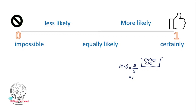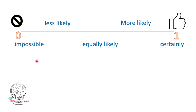Now let's talk about 'impossible'. In that same example, what is the chance of getting a black ball? There is no black ball in the bag. So if you try to get a black ball, that is impossible. The favorable outcome is 0, so the probability is 0. This is impossible.